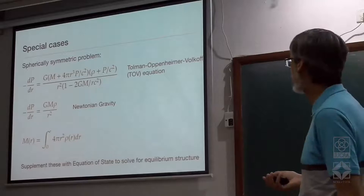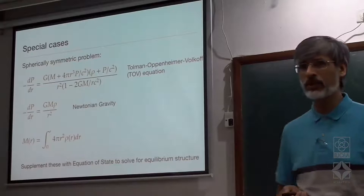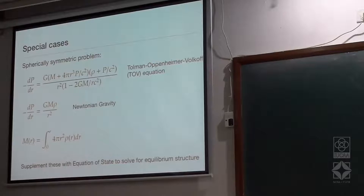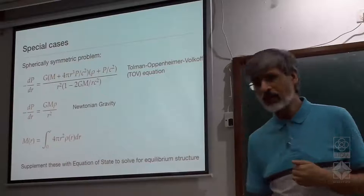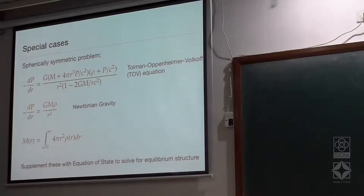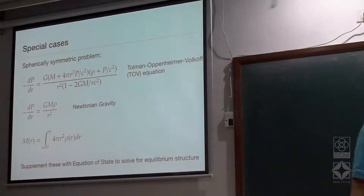This equation is called the Tolman-Oppenheimer-Volkoff equation, or TOV equation. It is at the heart of finding the structure of neutron stars and is used very extensively. Although not a single neutron star we know should actually satisfy the TOV equation exactly, because there is no non-rotating, fully spherically symmetric neutron star — but as long as those departures are small, we can stay with this.